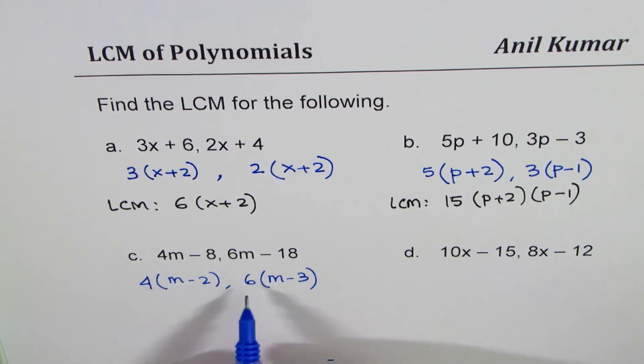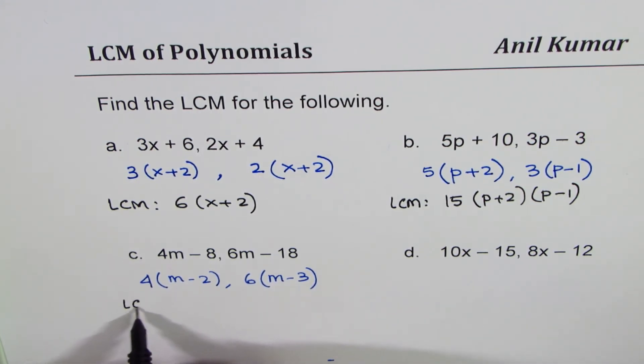Now amongst 6 and 4, what is the lowest common factor? 6 and 4. 6 times 2 is 12, 4 times 3 is 12. So the number 12 is the common factor. LCM will be 12 times.